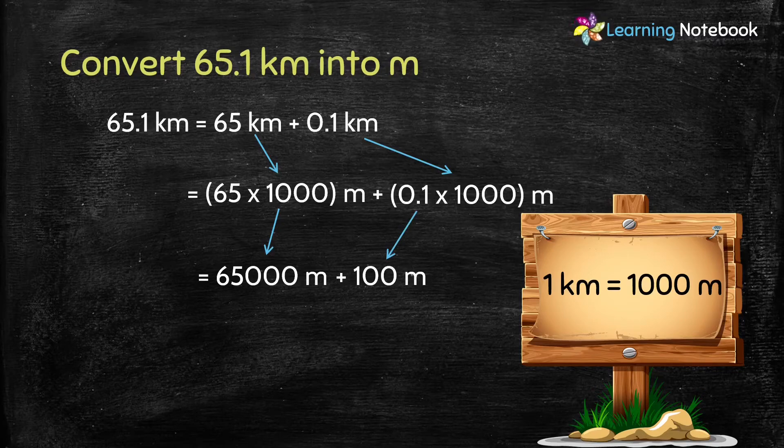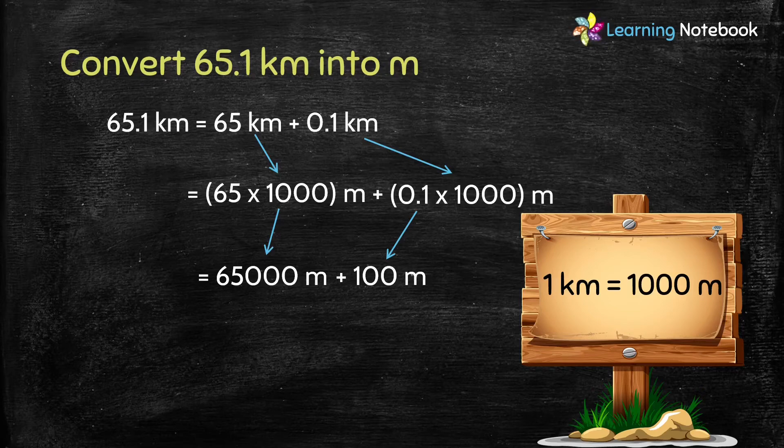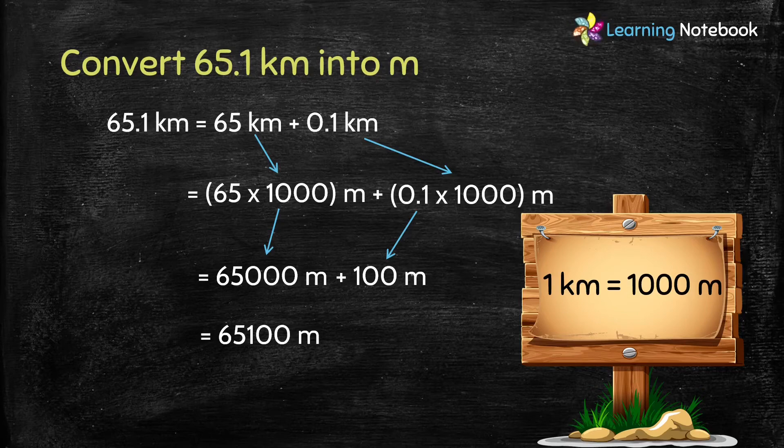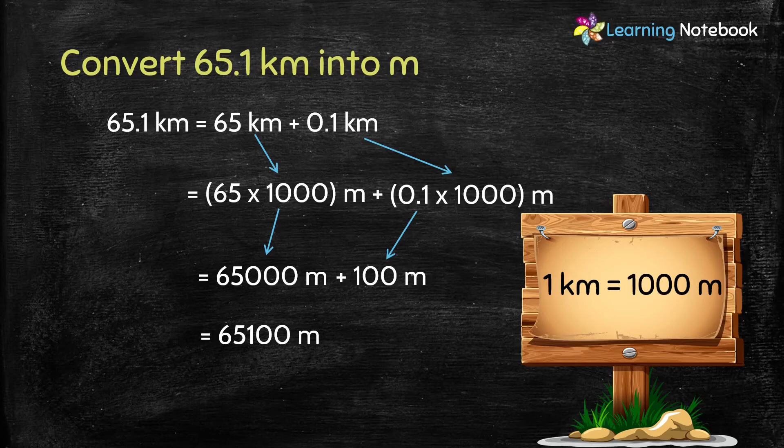Because, when a decimal number is multiplied by 1000, the decimal point moves to right 3 places. Now, let's add these two numbers. 65,000 plus 100 equals to 65,100. So, our answer is, 65.1 kilometer equals to 65,100 meter.